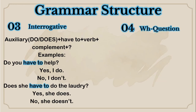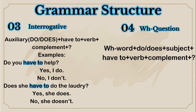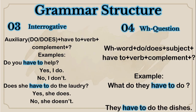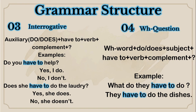Then you have the WH questions. Do you remember the WH words? Which, why, where, who, how, etc. The structure is: WH word plus do or does plus subject plus have to plus verb plus complement plus question mark. Example: What do they have to do? Remember to answer with a complete answer — they have to do the dishes. For third person singular: What does she have to do? She has to do the dishes.